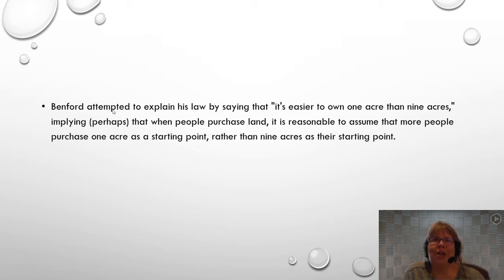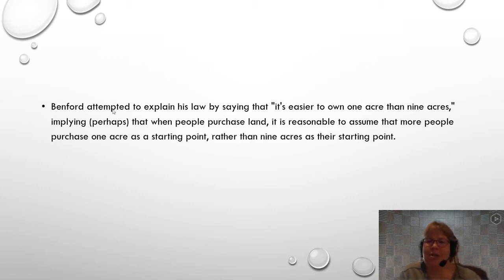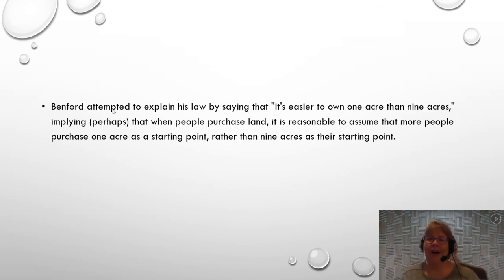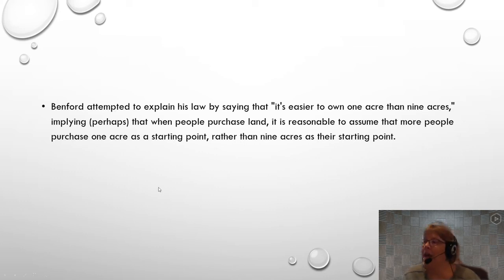Benford's Law just doesn't really seem feasible if you don't really think about some of the math behind it, especially when it comes to things like river lengths and volcanoes. But it actually does apply. Benford tried to explain it, and I think this is a good explanation: it's easier for somebody to buy one acre of land than nine. You can extrapolate that — a thousand over nine, a hundred over nine hundred, and so on. So when buying land, it's easier to achieve those lower numbers, and hence that's why you see them in higher percentages.